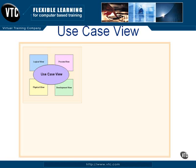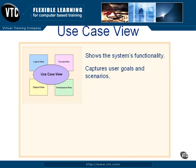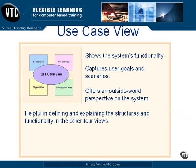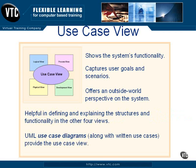And finally, the plus one — the use case view. The use case view shows the system's functionality; in other words, this view illustrates what the system is supposed to do. The use case view captures user goals and scenarios, and it offers an outside-world perspective on the system. The use case view is helpful in defining and explaining the structures and functionality in the other four views, so this plus one view provides a guide for the models in the other four views. UML use case diagrams, along with written use cases and requirement specifications, provide the use case view. The 4+1 model is important because it helps you make sure that you've considered and documented all the important aspects of your system.